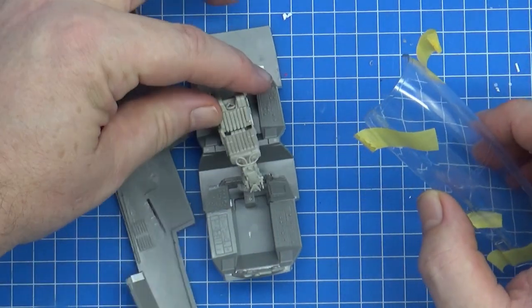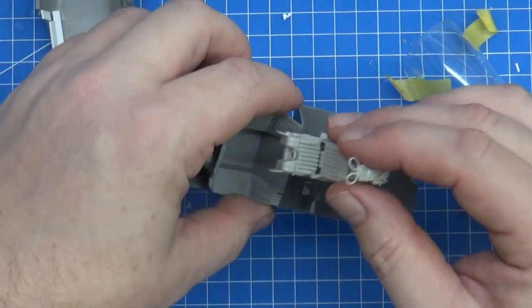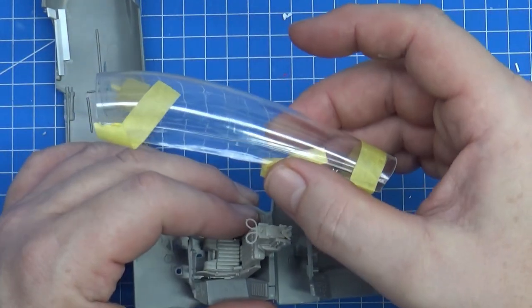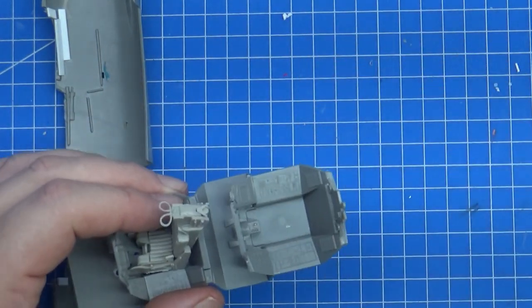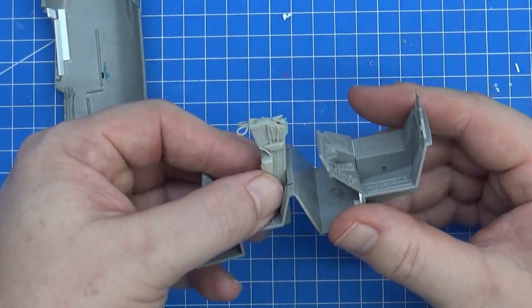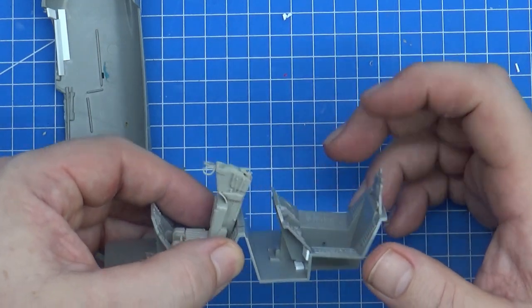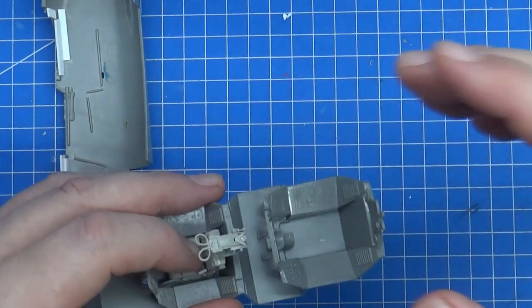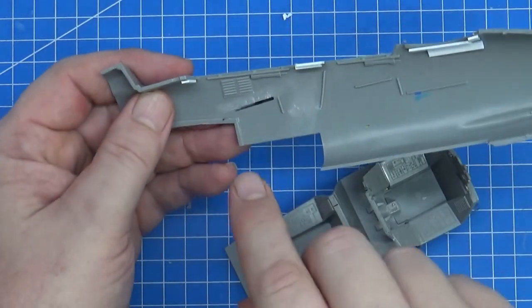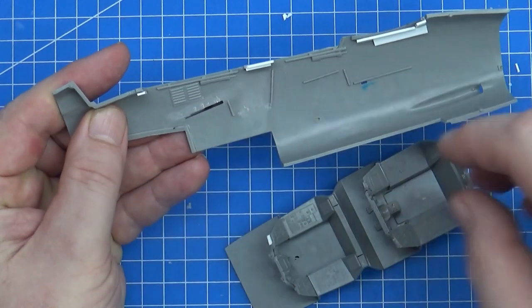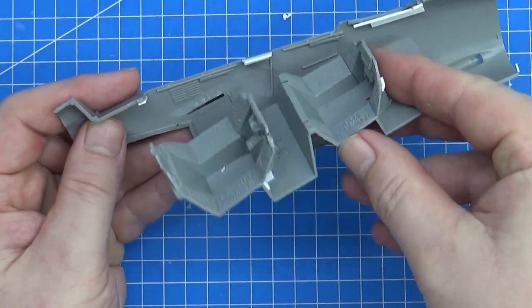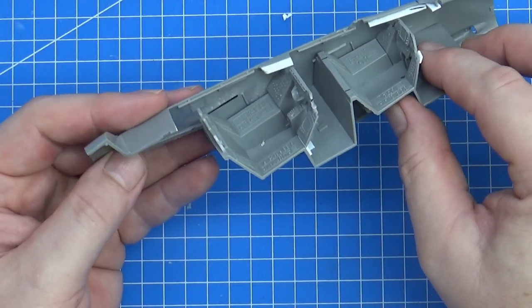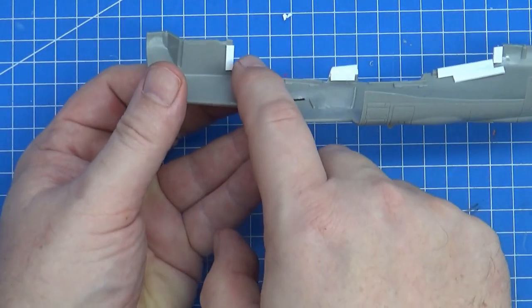I got everything to fit, everything was working nicely, then I thought, okay, let's put the canopy on just to make sure, because this happens even in regular normal kits. Both of them, particularly the RIO in the back seat, the ejection seat wouldn't fit under the canopy.